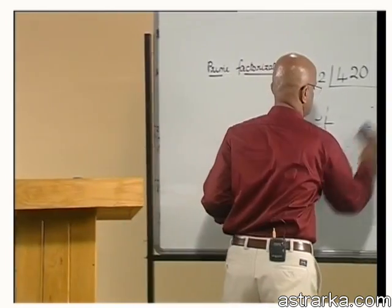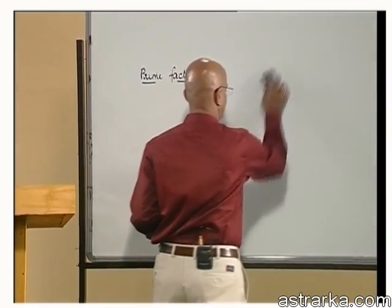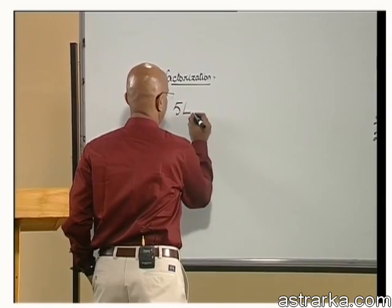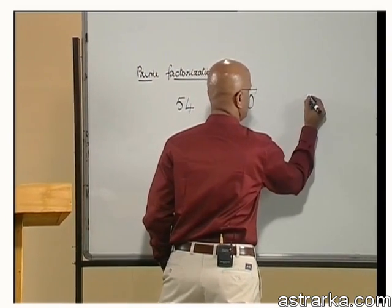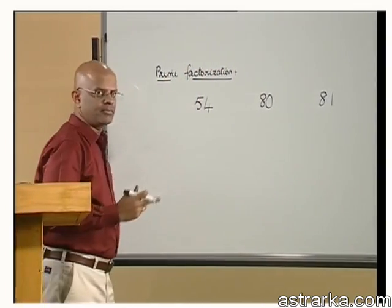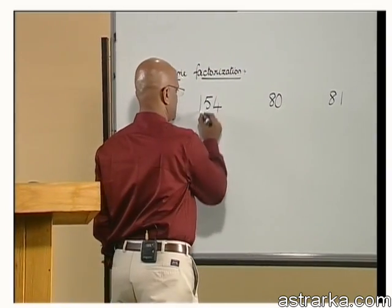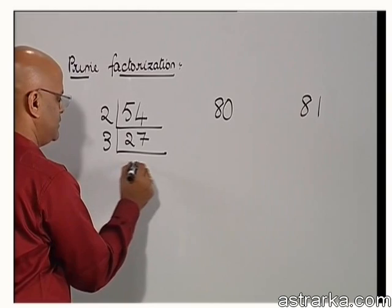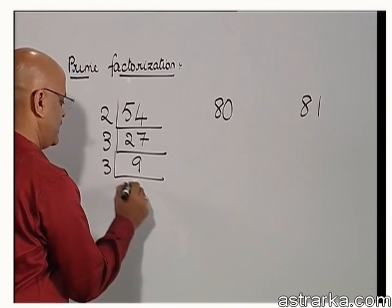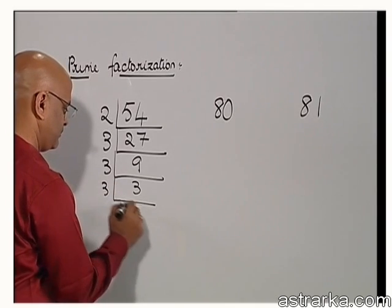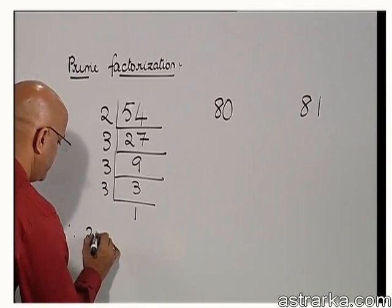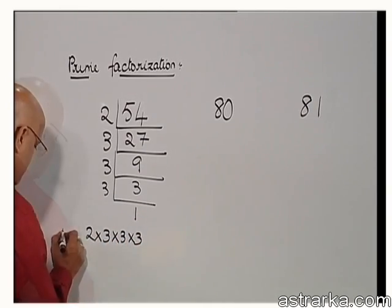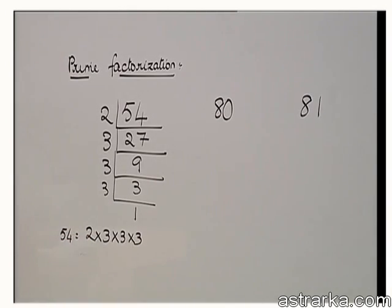Let us solve a couple of problems: 54, 80, and 81. We want to find the prime factorization of these numbers. Starting with 54: divide by 2, you get 27. 27 is divisible by 3, giving 9. 9 is divisible by 3, giving 3, and 3 divided by 3 is 1. Therefore, 54 is 2 into 3 into 3 into 3.